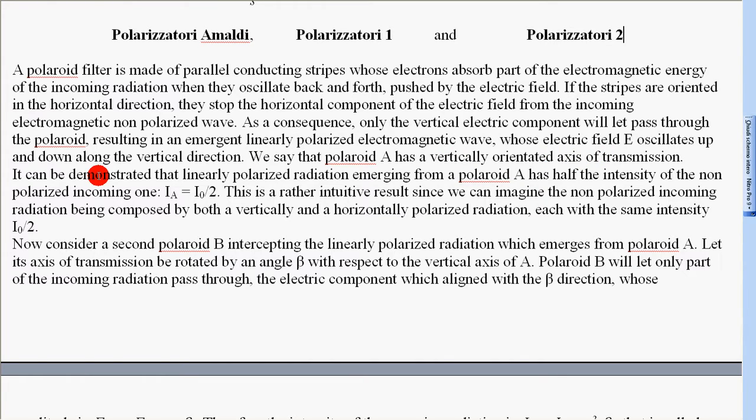It can be demonstrated that linearly polarized radiation emerging from polaroid A has half the intensity of the non-polarized incoming one. I_A equals I_0 divided by 2, that is one-half I_0.